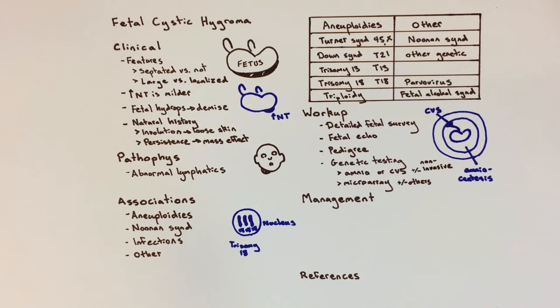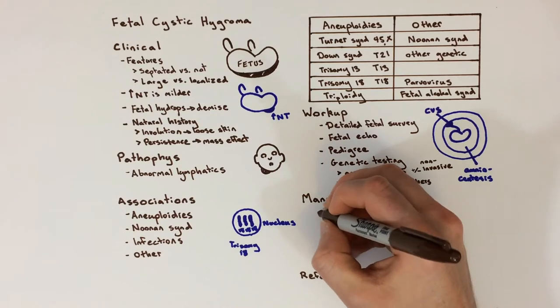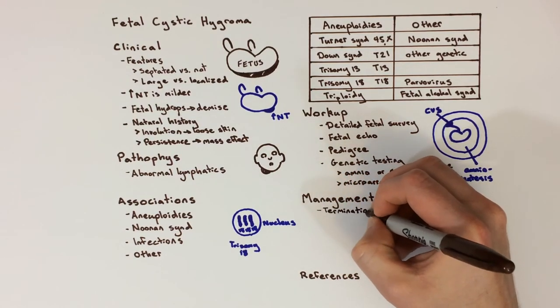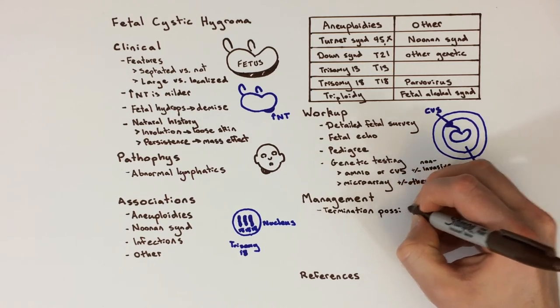If a genetic syndrome or additional congenital malformation is identified, or even on account of the risk of these complications, some women will choose to terminate a pregnancy with a fetal cystic hygroma.